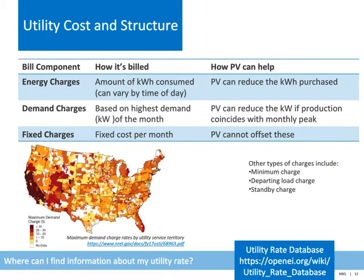Your current utility cost is perhaps one of the most important factors in deciding if PV is going to work at your site. Compared to the PV resource, which varies by a factor of 2 across the United States, utility costs can vary by a factor of up to 10. But it's not as simple as just dollars per kilowatt hour. There can be many components and different types of charges on your electricity bill. The energy charges are determined by the amount of electricity that a site consumes. PV can reduce the amount of electricity purchased and therefore this charge, though be aware the energy charge can vary depending on the season and time of day.